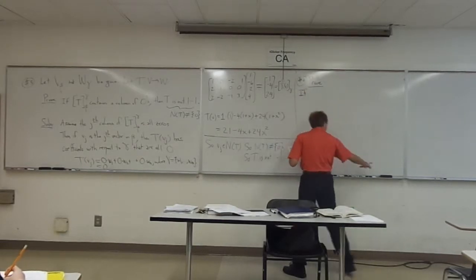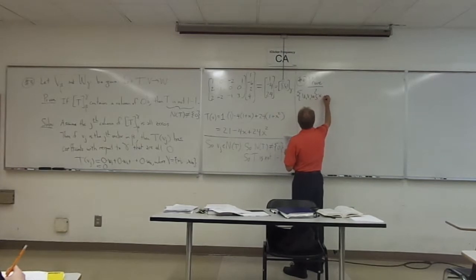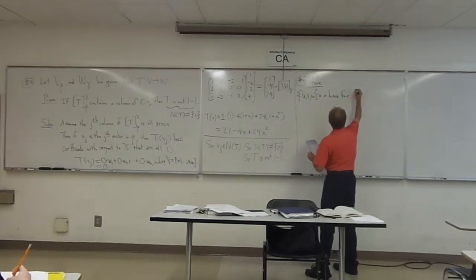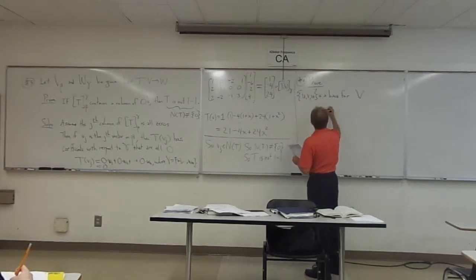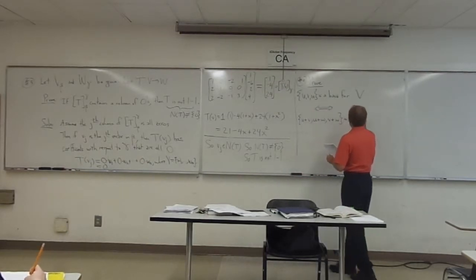Okay. So, prove the following. If, actually this is going to be if and only if here. The set {U, V, W} is a basis for V if and only if the set {U+V, U+W, V+W} is a basis for V.